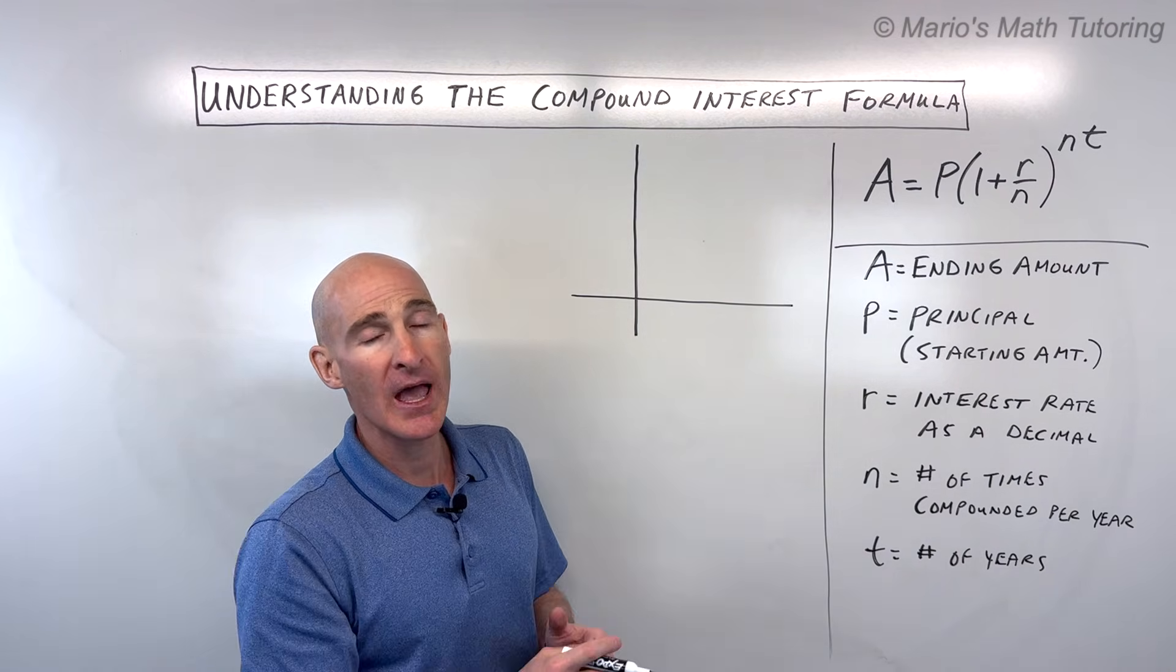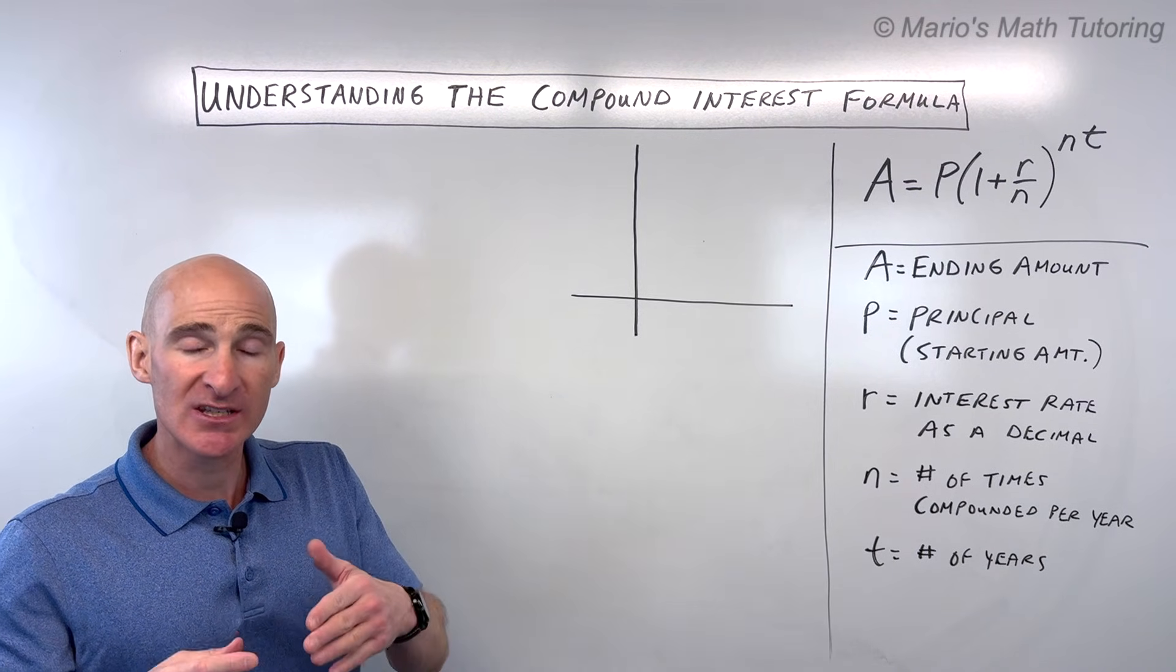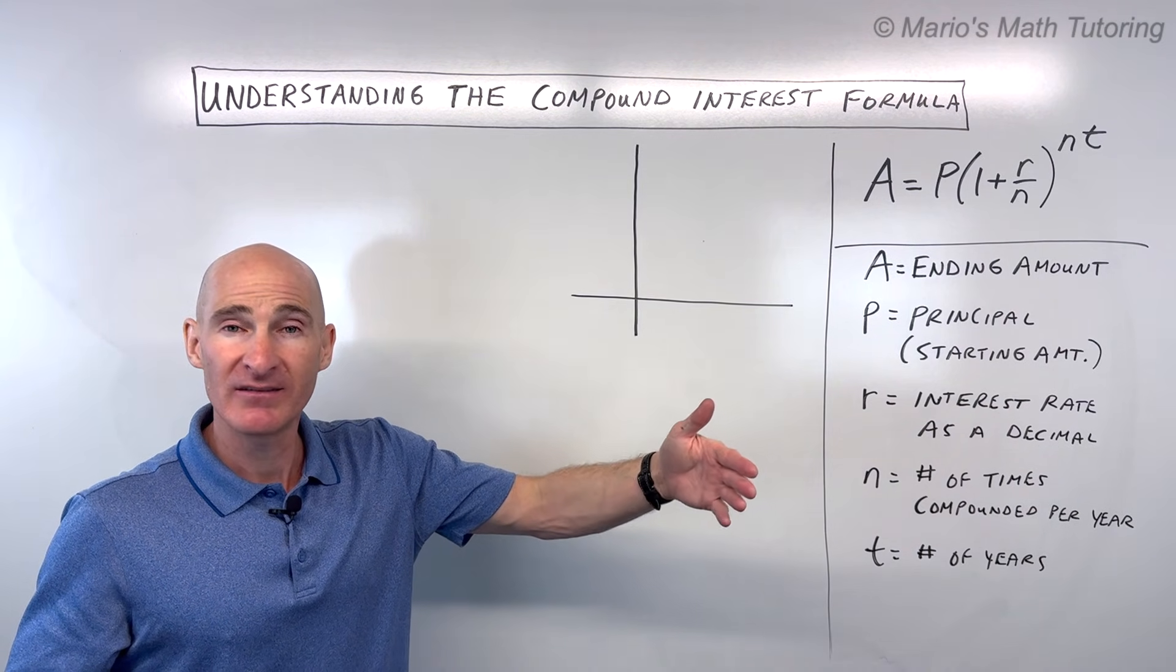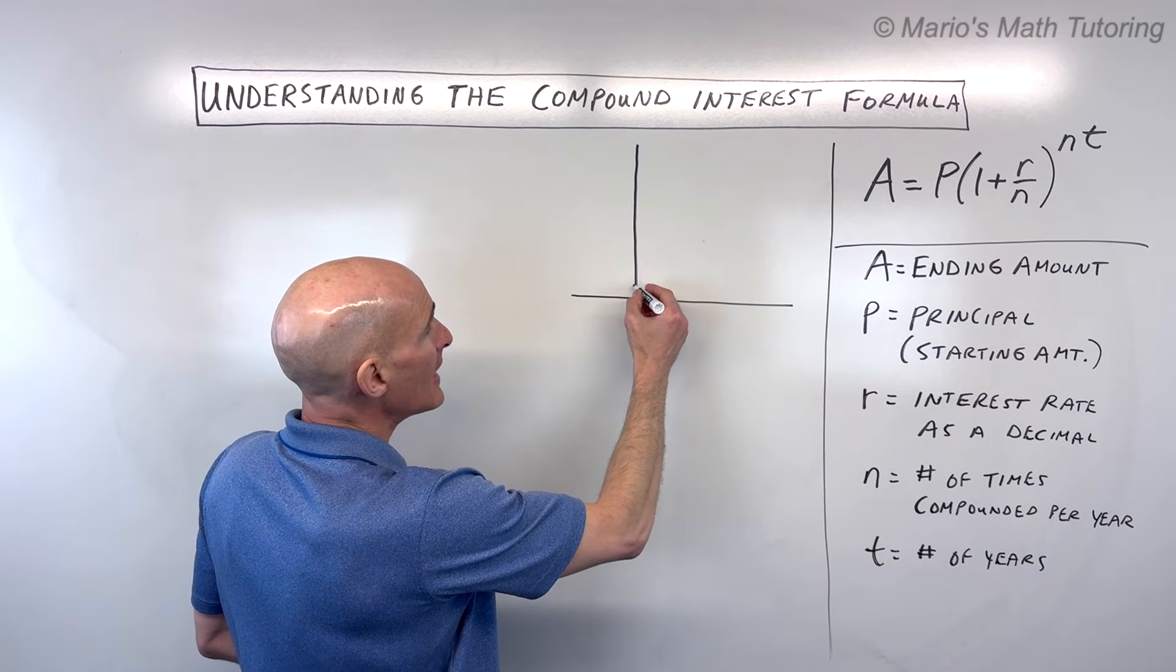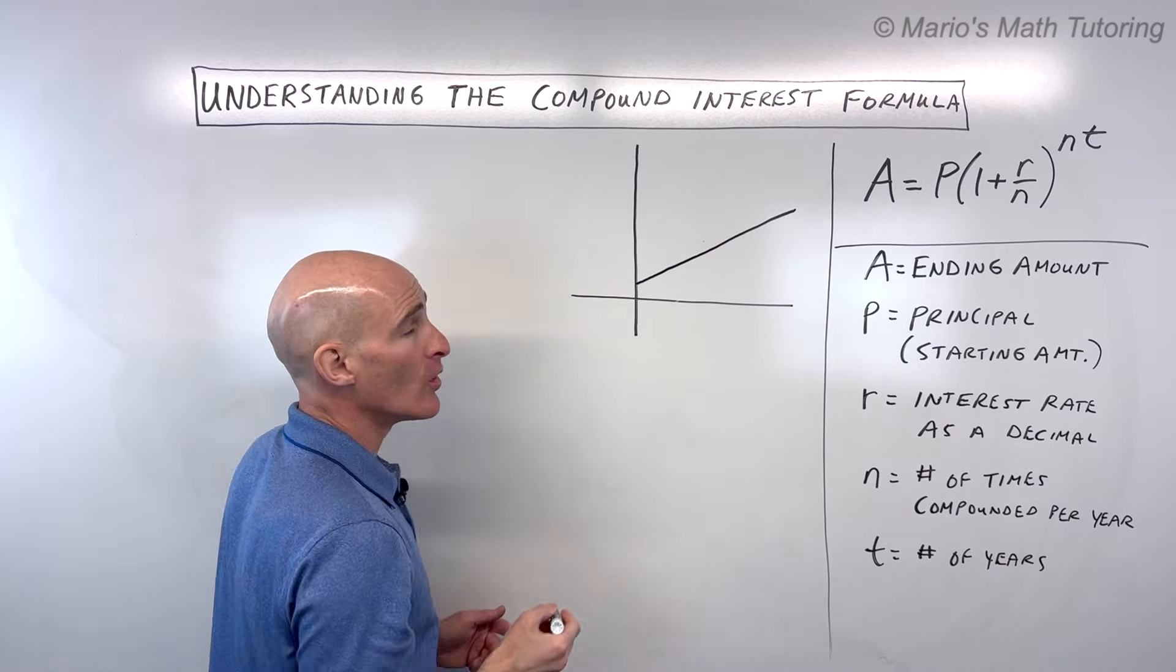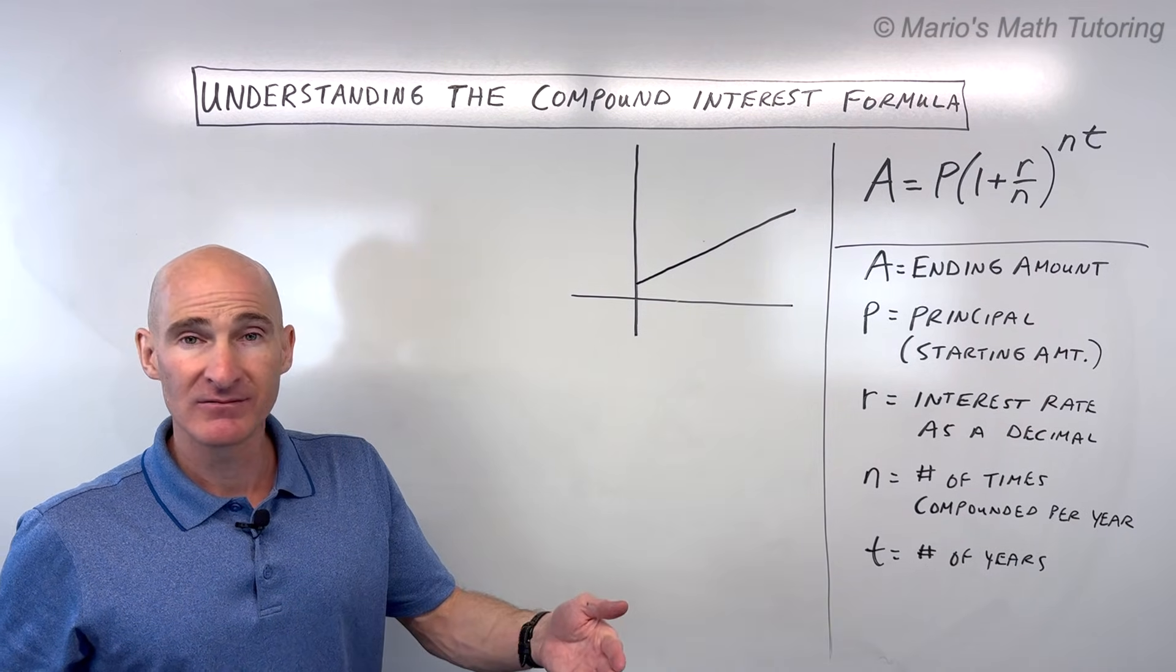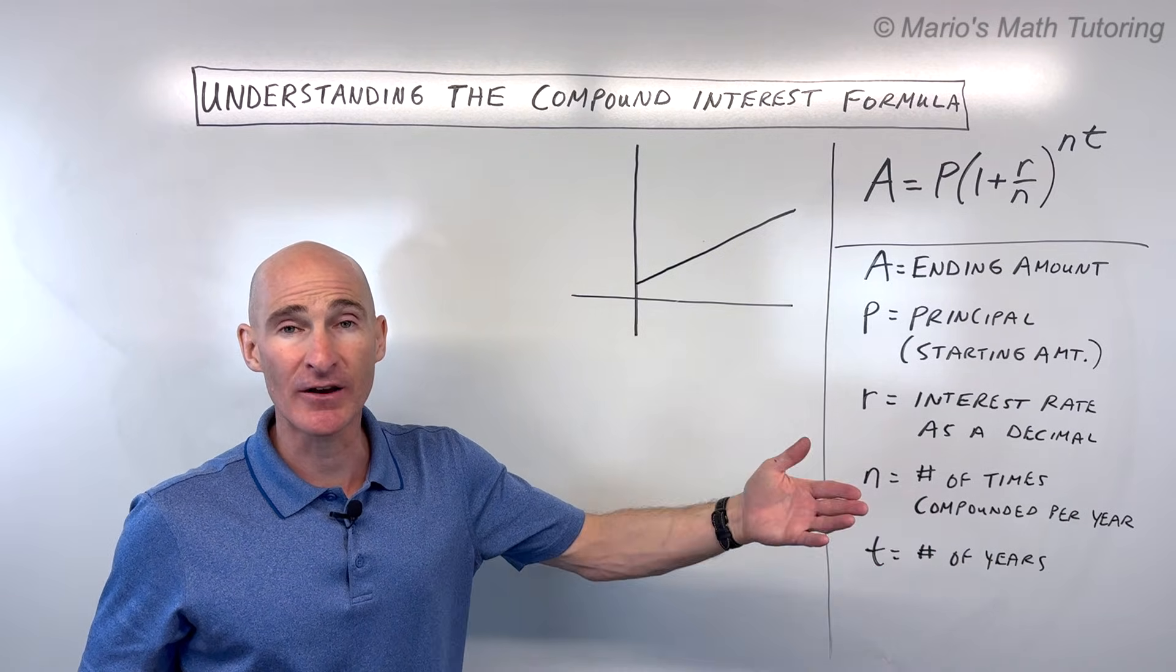We think about snowballing as opposed to simple interest. Simple interest, you just get the same amount of interest year after year on that initial investment. And what happens is it grows linearly. When we say linearly, we mean like in a straight line. So every year you get a couple dollars on that investment. It never changes. It's like a fixed amount.